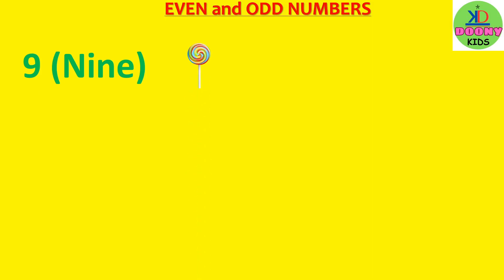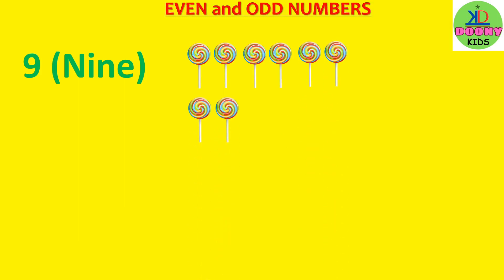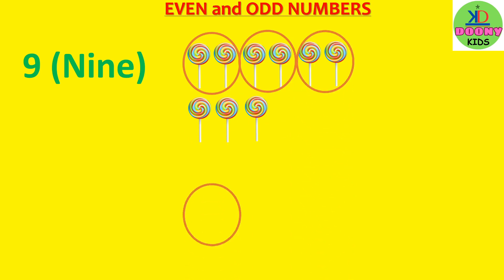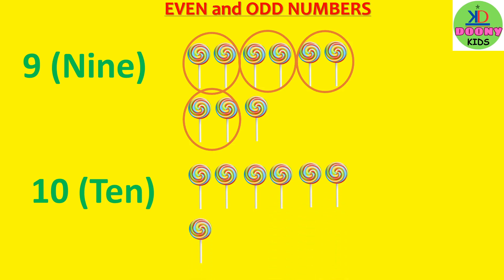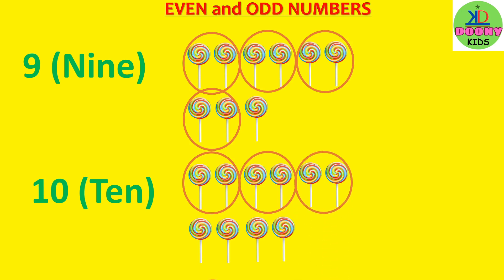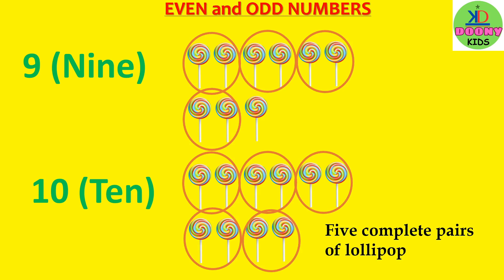9 — 1, 2, 3, 4, 5, 6, 7, 8, 9. Now count the pairs: 1, 2, 3, 4 — there are incomplete pairs. So number 9 is an odd number. 10 — 1, 2, 3, 4, 5, 6, 7, 8, 9, 10. Now count the pairs: 1, 2, 3, 4, 5 — there are 5 complete pairs of lollipop. So number 10 is an even number, and number 9 is an odd number.